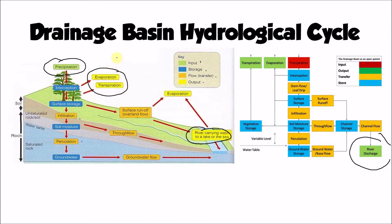These terms are sometimes grouped under the collective term evapotranspiration — that is a collective term for all water lost through evaporation and all water lost through transpiration. Evapotranspiration is another output of the drainage basin system. For example, rain could fall as precipitation, be intercepted by the leaves of a tree, and then be evaporated back into the atmosphere, or it might infiltrate into the soil, flow horizontally downslope through the soil in the process of throughflow, end up in the river, and either be evaporated or discharged out to sea.